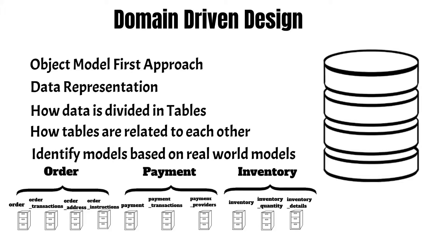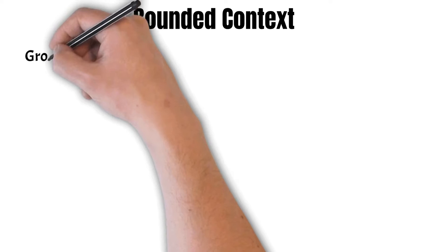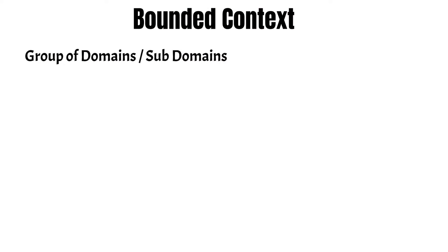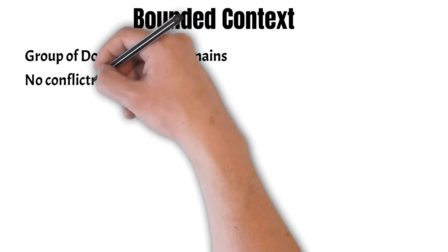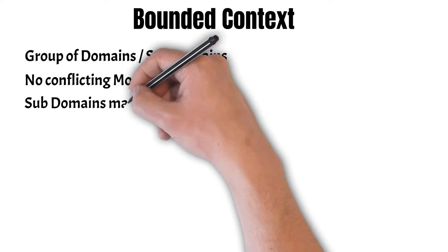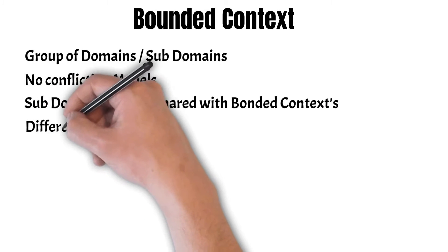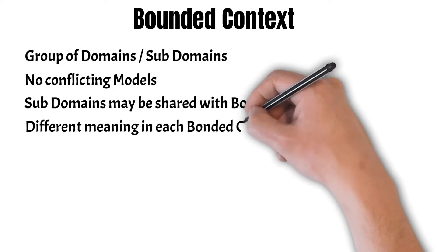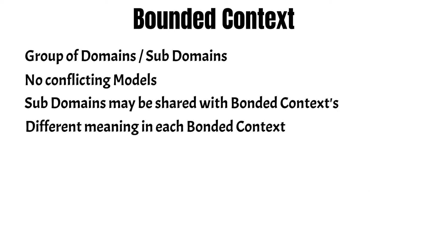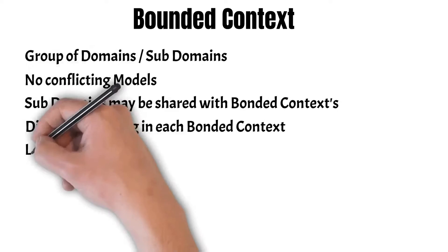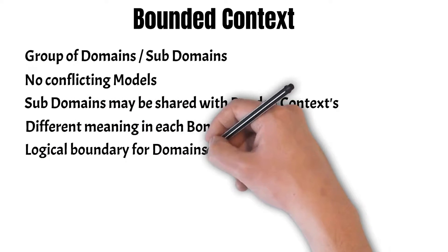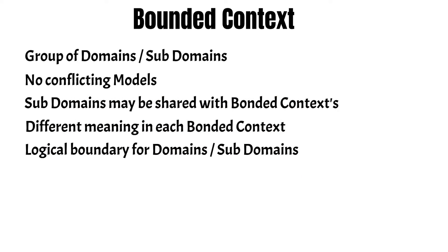Once we have identified our domain models, we can move forward to defining our bonded context. The context in which domain driven design is applicable is called a bonded context. It can be understood as a group of domains or subdomains where there are no conflicting models between them. Some subdomains may be shared across different bonded contexts, and in each subdomain they will have a different meaning or a different relevance in that bonded context.